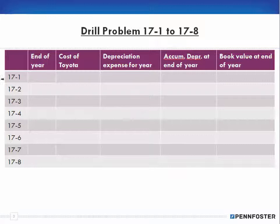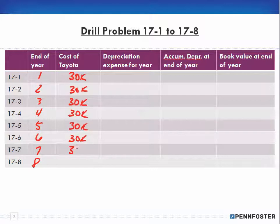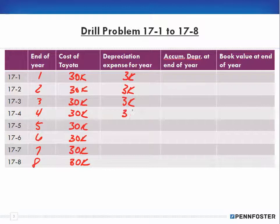Now you have to create the schedule. We have end of year: one, two, three, four, five, six, seven, and eight. The cost column is always going to be $30,000 — yes, repetitive, but it needs to be done whether by hand or in an Excel spreadsheet. The depreciation expense for the year we just calculated is $3,000, and it stays the same for each and every year because that's what straight line is about — the same depreciation amount each year.